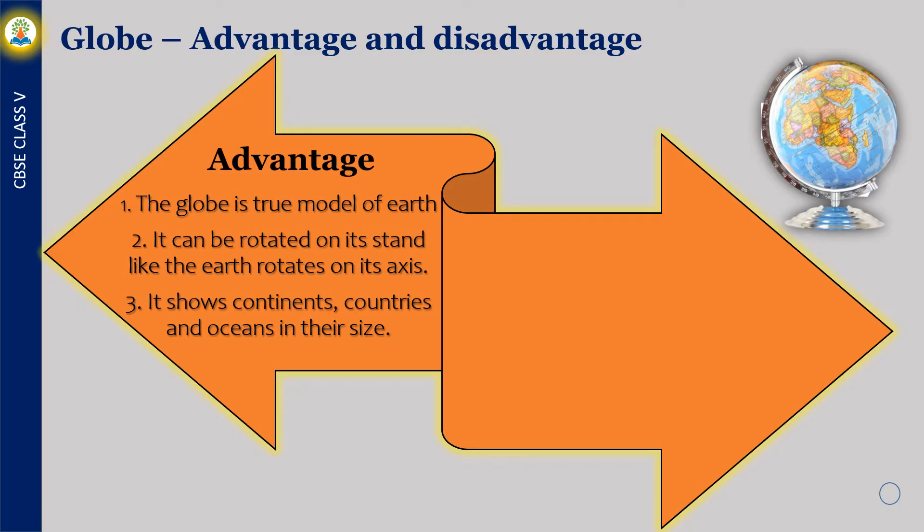As we learned in the previous video, the advantages of the GLOBE are that it is a true model of Earth. It can be rotated on its stand like the Earth rotates on its axis, and it shows continents, countries and oceans in their correct size.